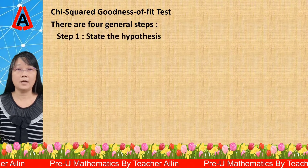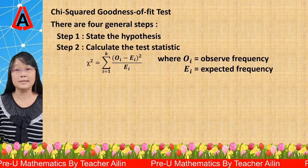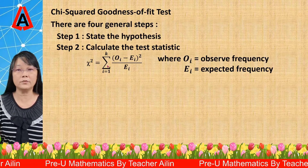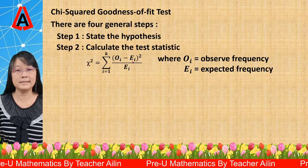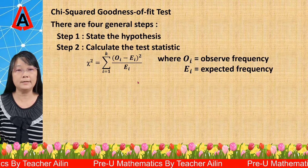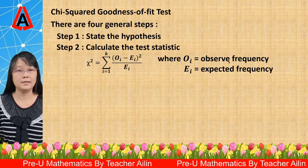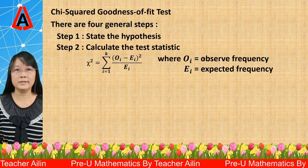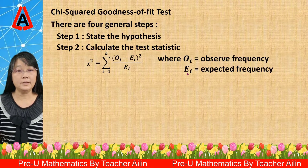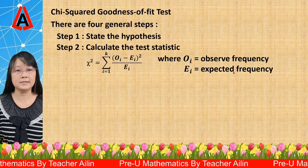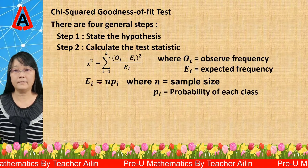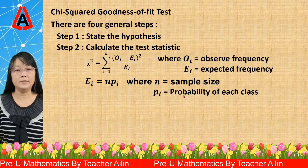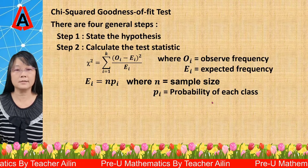The first step is to state the hypothesis. The second step is to calculate the test statistic, that is Chi-squared equals the sum of (O minus E) squared divided by E, where O is the observed frequency — the real data collected from the sample, normally given in the question. For E, E is the expected frequency, which can be calculated using the formula E = N times P, where N is the sample size and P is the probability of each class.